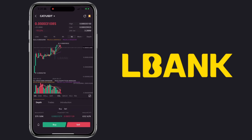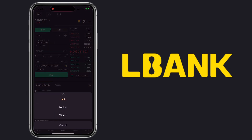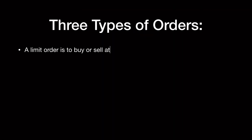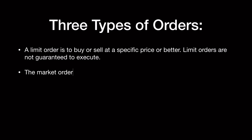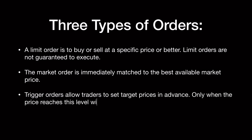First, let me show you how to buy using spot trading. Tap on the Buy button. LBank supports three types of orders: limit, market, and trigger. A limit order is to buy or sell at a specific price or better — limit orders are not guaranteed to execute. The market order is immediately matched to the best available market price. Trigger orders allow traders to set target prices in advance; only when the price reaches that level will a limit or market order be triggered.